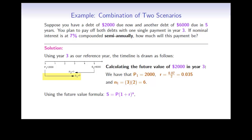For the $2,000 debt due now, we calculate its future value at year 3. Since the arrow points to the right, we use the future value formula. With R equals 0.07 divided by 2 equals 0.035 and N1 equals 3 times 2 equals 6 periods, we get S1 equals 2,000 times 1.035 to the power 6, giving us $2,458.51.